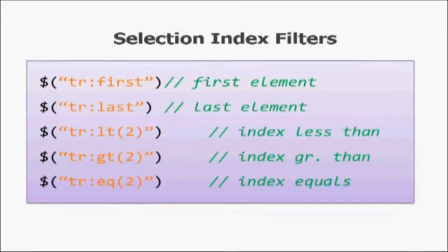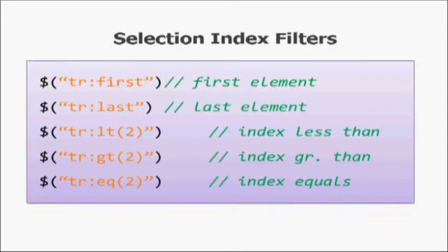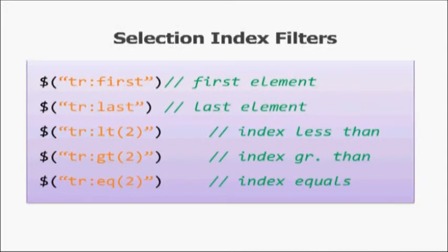There are also filters: first, last, less-than, greater-than, and equal-to. Less-than, greater-than, and equal-to use a zero-based index. So if you are referring to the first element, you will have to use zero for the equal filter, or less-than one if you want to select up to the first element.